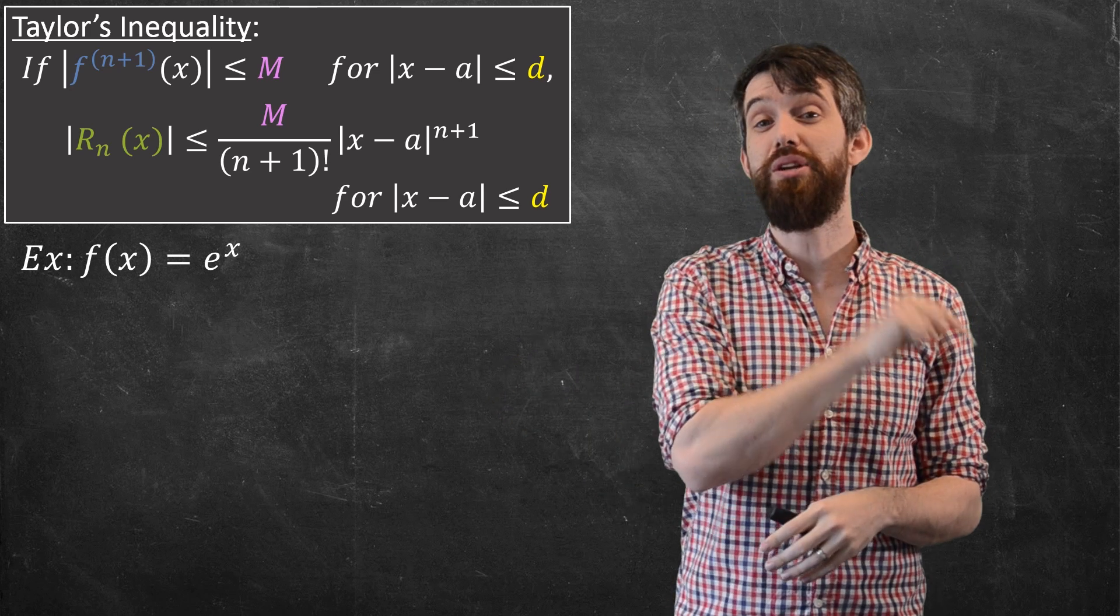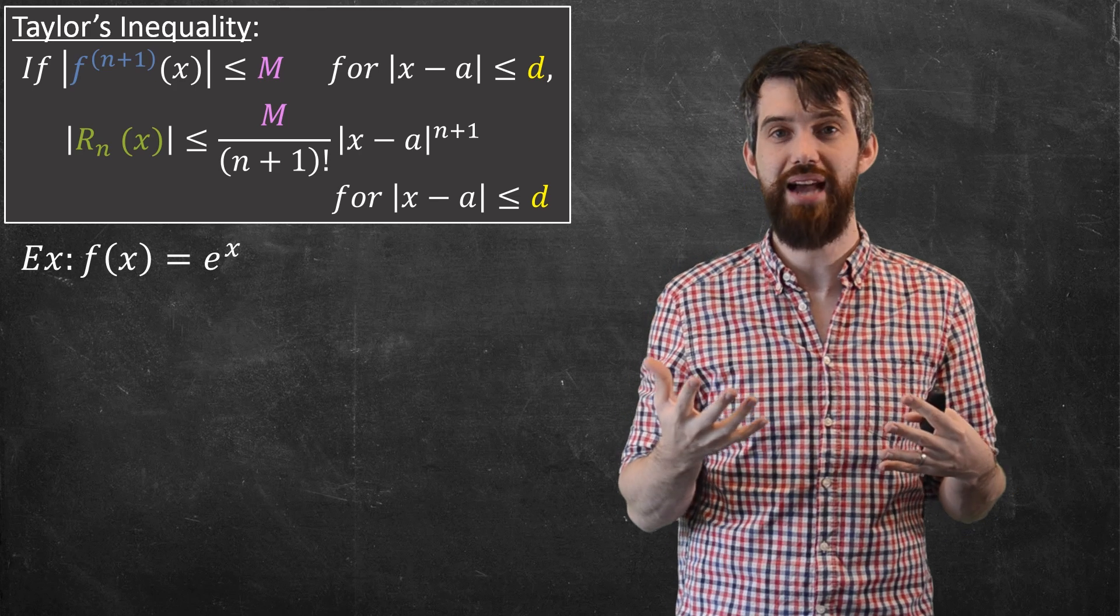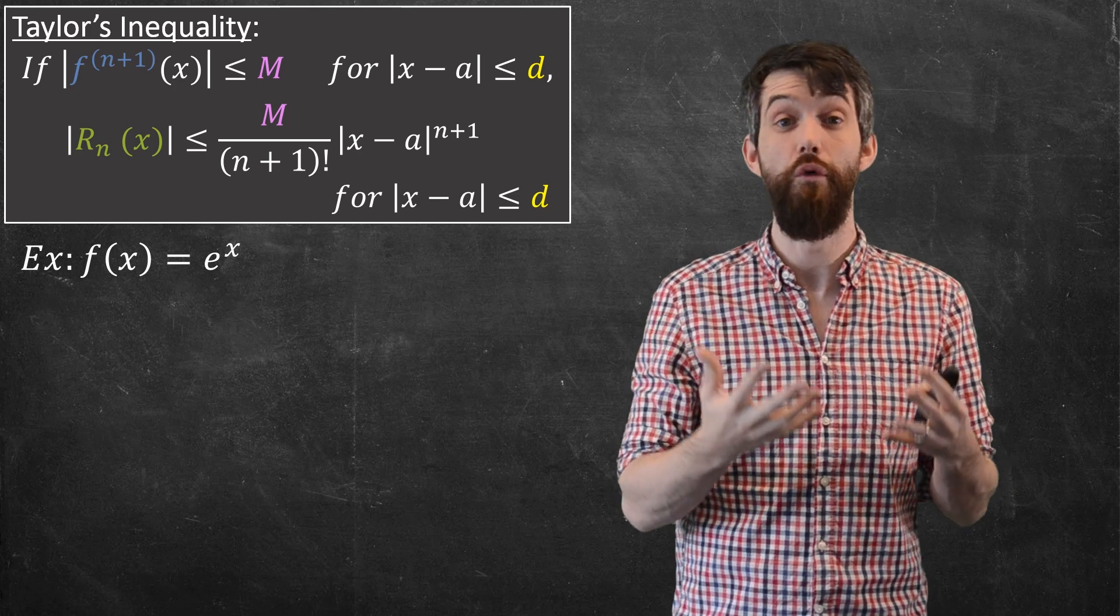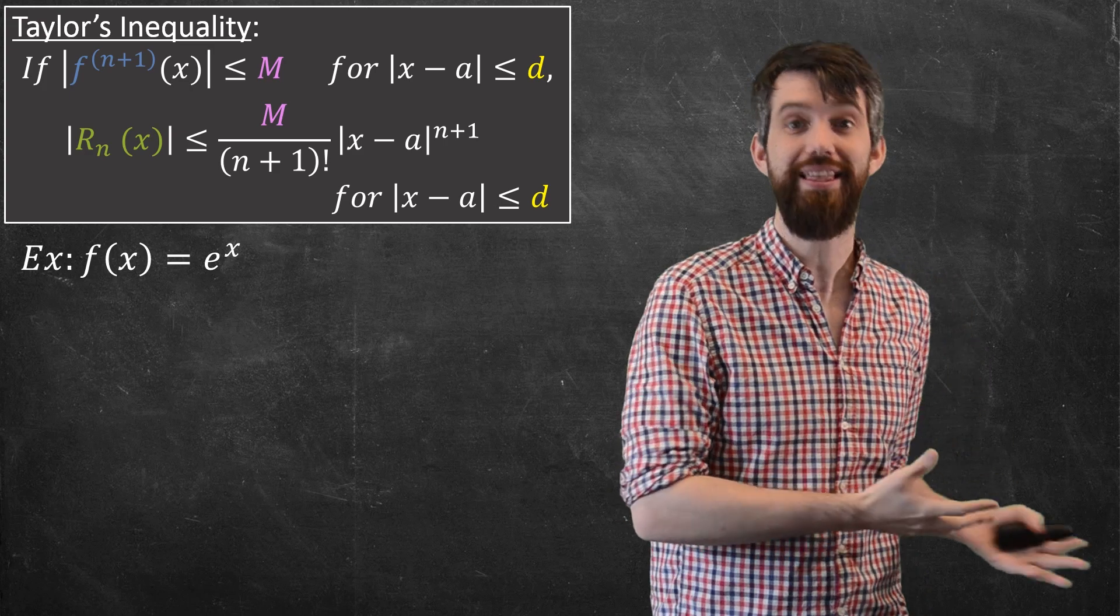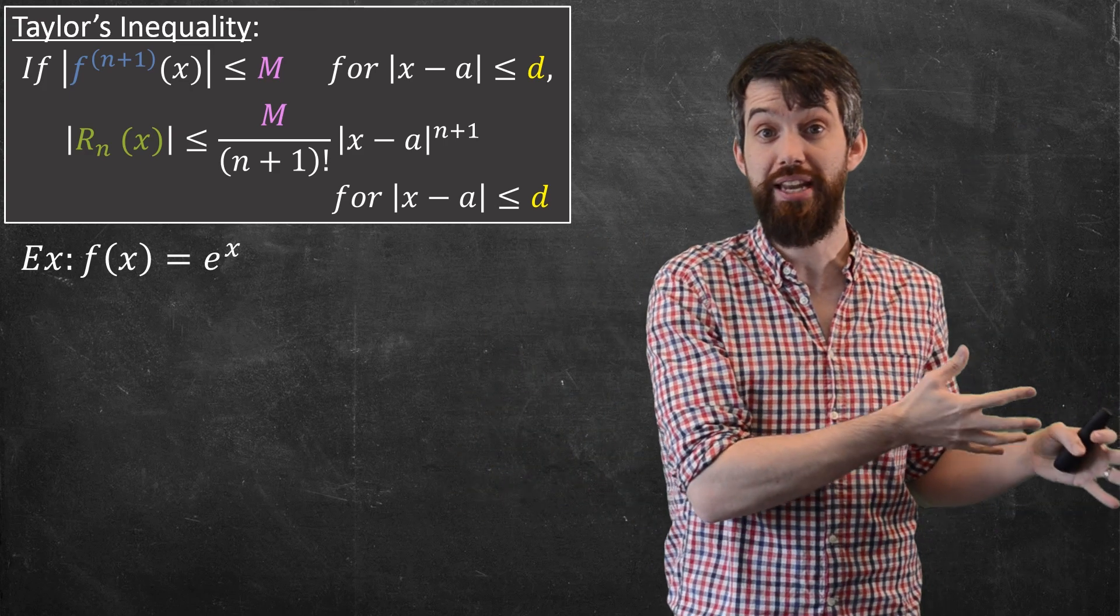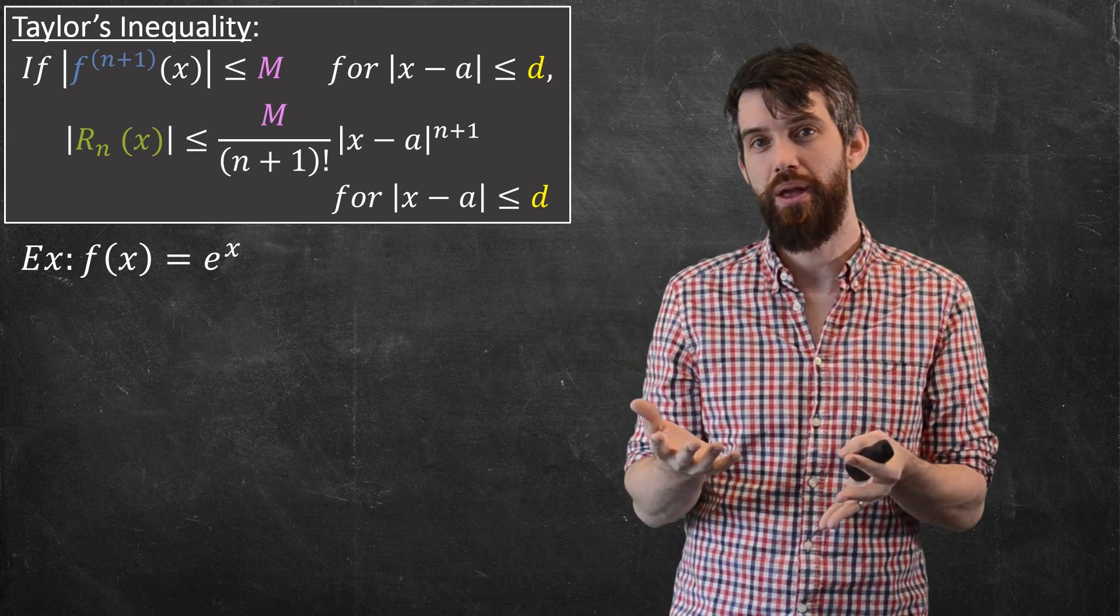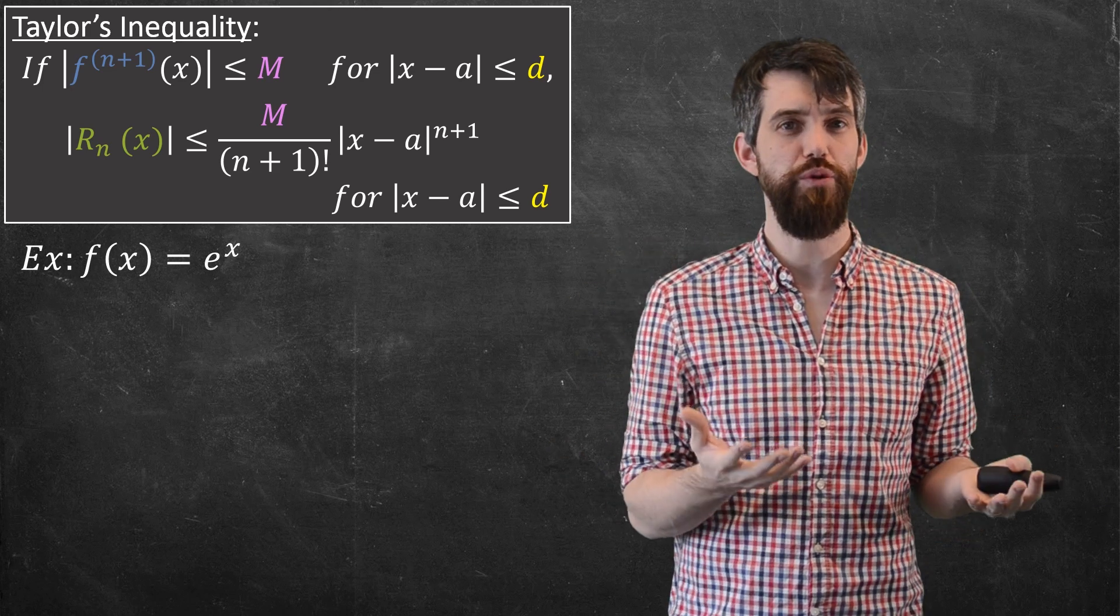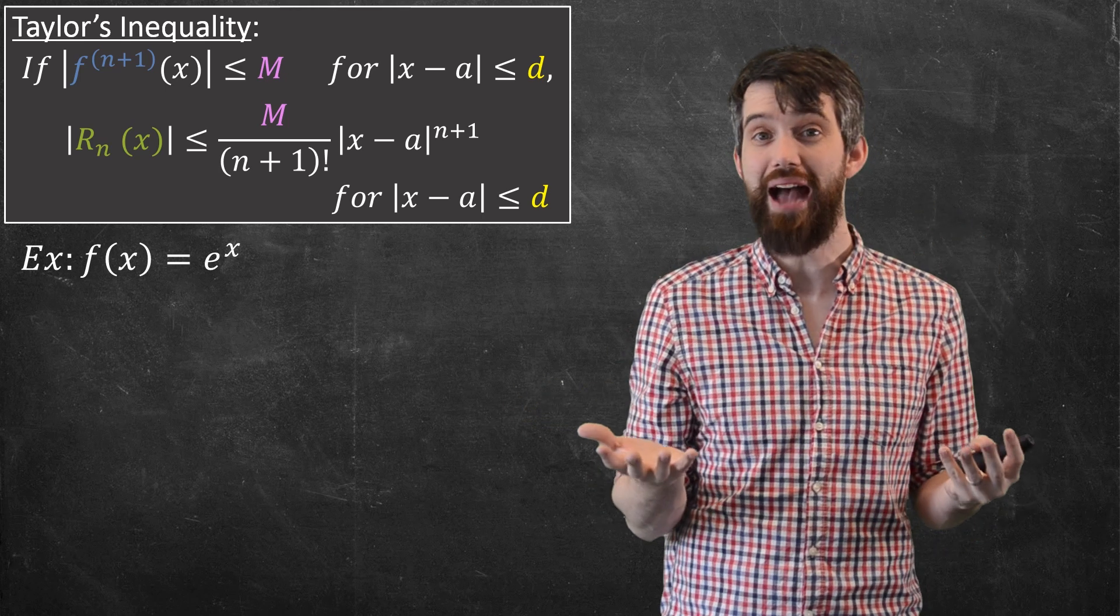What I said was that if there is a power series that converges on some interval, then that power series better have the coefficients given by the Taylor series. In the case of e^x, the coefficients are 1 over n factorial. So the whole thing was conditional on the fact that if you had a representation, then it tells you what the representation was. But does e^x even have a power series to begin with? So let's go out and compute the remainder and see whether the remainder is good or whether the remainder is bad.